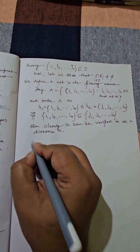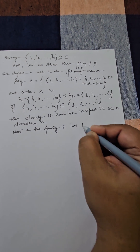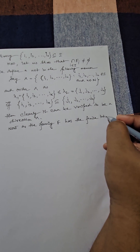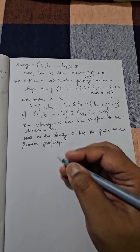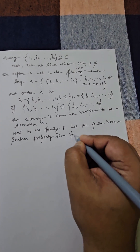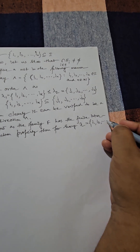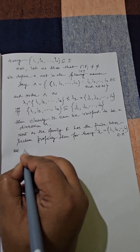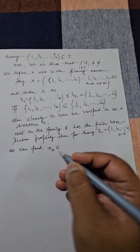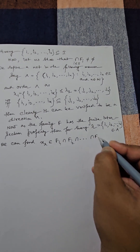Since the family F has the finite intersection property, for every λ = (i₁, i₂, … , i_N) belonging to Λ we can find x_λ belonging to F_{i₁} ∩ F_{i₂} ∩ … ∩ F_{i_N}.